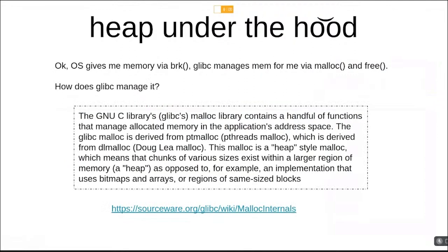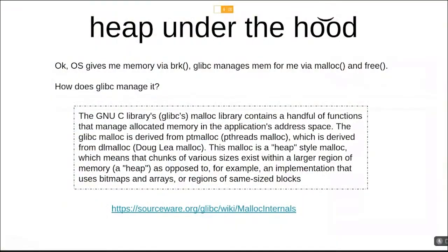The OS gives memory via brk, and glibc manages it with malloc and free. The glibc allocator is a fork of ptmalloc (Posix threads malloc), which itself is a fork of dlmalloc (Doug Lea's malloc). It's described as a heap-style malloc, meaning the chunks of data you get from glibc via malloc are organized in a kind of heap structure — basically you have a heap of chunks, and glibc manages it for you.